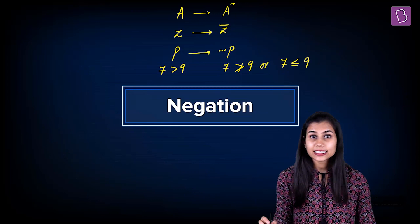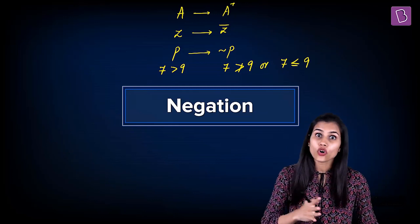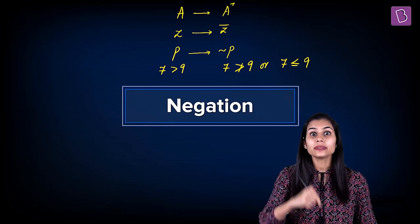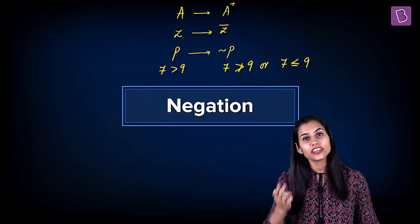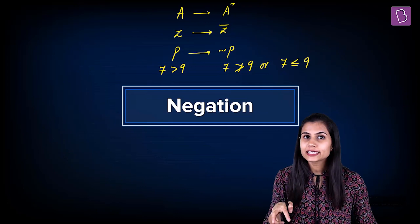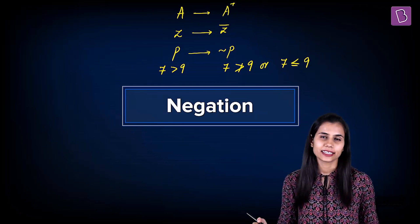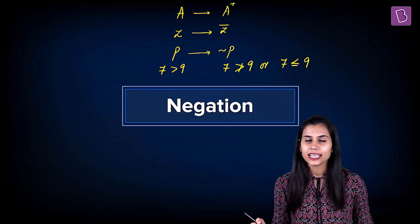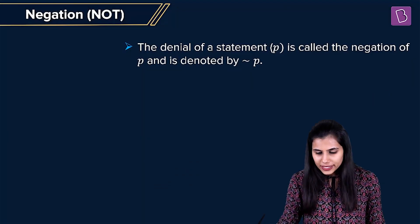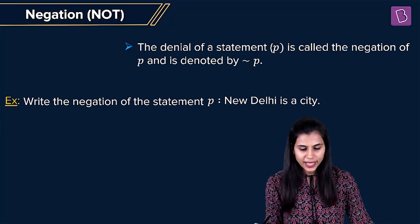If P says Ram is not in class 10th, then negation P will deny this. It will say that Ram is in fact in class 10th. Now there are many ways of writing and representing negation P — let's understand that.